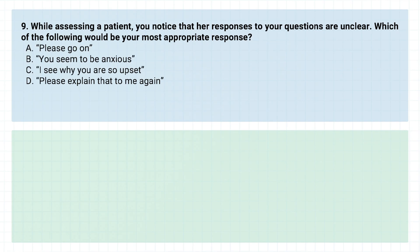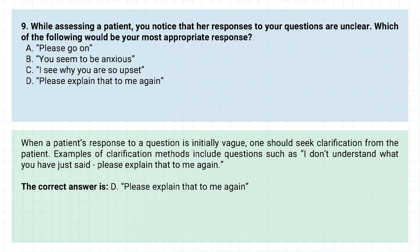Question number nine. While assessing a patient, you notice that her responses to your questions are unclear. Which of the following would be your most appropriate response? A. Please go on. B. You seem to be anxious. C. I see why you are so upset. D. Please explain that to me again. The correct answer is D. Please explain that to me again. When a patient's response to a question is initially vague, one should seek clarification from the patient. Examples of clarification methods include questions such as, 'I don't understand what you have just said — please explain that to me again.'